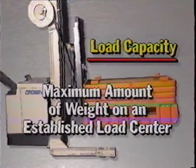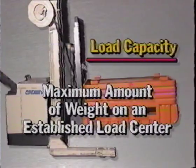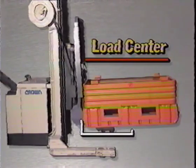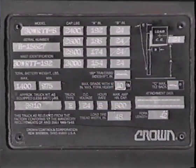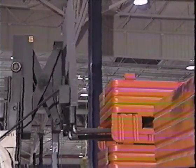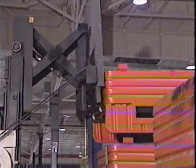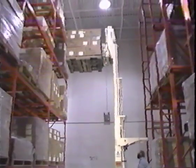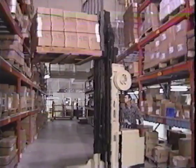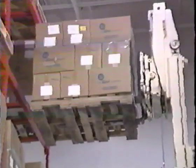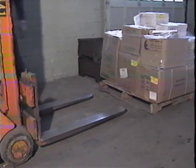After the pre-operation check is completed, check the manufacturer's data plate to find the load capacity of your vehicle. The load capacity is the maximum amount of weight on an established load center that the vehicle can safely lift — a perfectly balanced load. The load center is the distance from the vertical faces of the forks to the center of the load being handled. The load capacity listed is for optimum conditions. As the load center shifts further out, the weight you can safely lift is reduced. As the height of the lift increases, the load capacity is also reduced. Most trucks have full weight capacity up to a certain height and are downrated above that height.